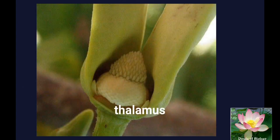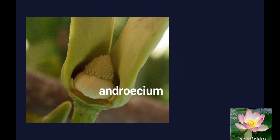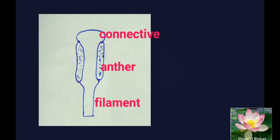A large convex thalamus is present on which all the floral organs are arranged. The androecium is numerous with closely packed spirally arranged stamens. The filament is short and thick and the connective is prolonged through a hood at the apex.